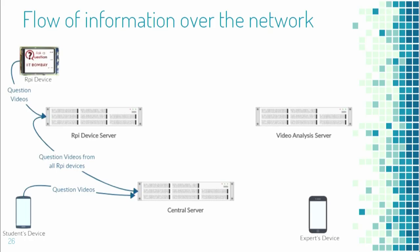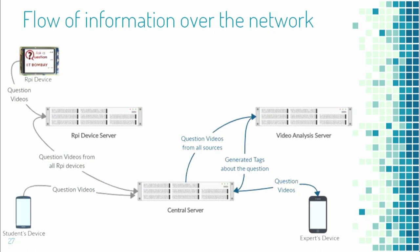If the MD5 matches that of the original file, the device adds an entry to the SQLite database and deletes the video from the local file system. This is the full flow of information over the network. Question videos are sent from RPi devices to the RPi device server, which forwards them to a central server that also receives questions from Android and iOS apps. These questions go to a video analysis server that generates tags, used to identify experts who answer the questions, which are then sent back to original users.